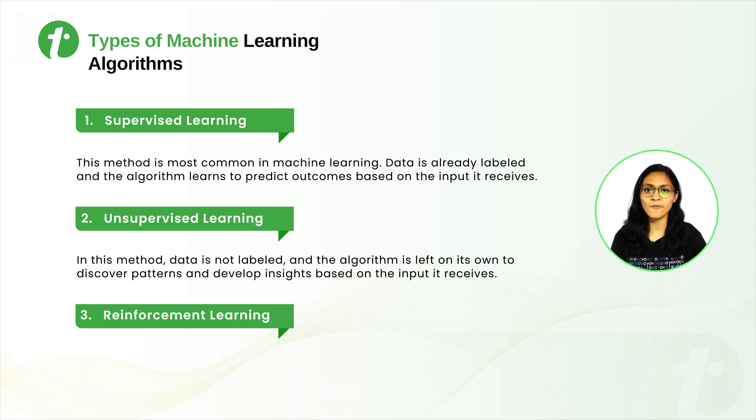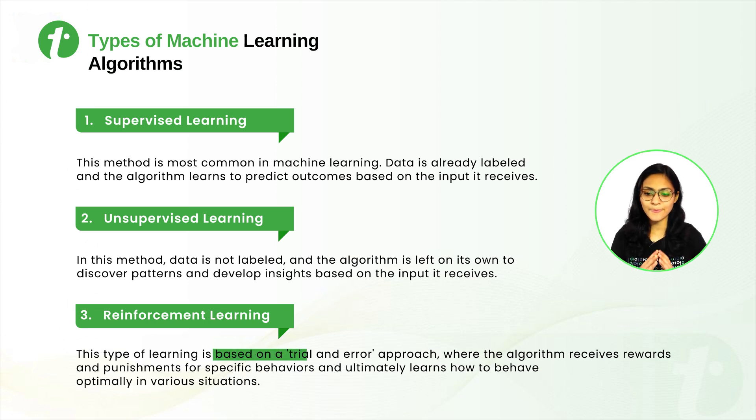Third is Reinforcement Learning. Reinforcement Learning is based on the trial and error approach. In reinforcement learning, the algorithm learns by itself on the basis of rewards or punishments for its behavior.